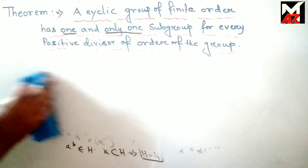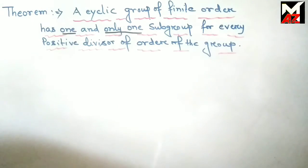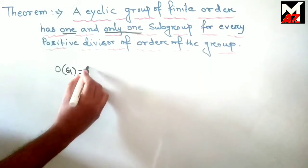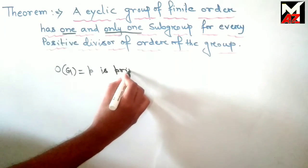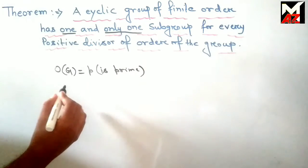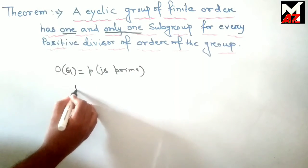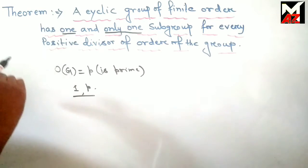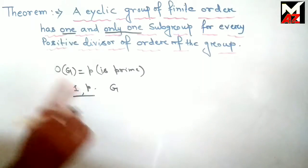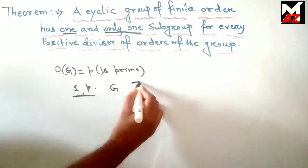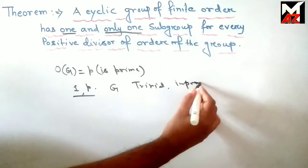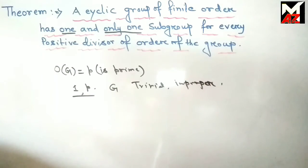From this theorem it follows that if the order of a cyclic group G is P, where P is prime, then the only divisors of P are 1 and P. So by this theorem, G has only two subgroups: one trivial and the other improper.